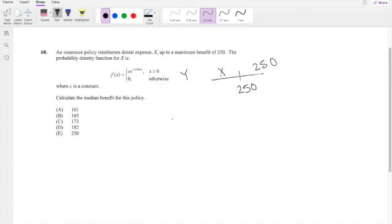C is a constant. We can actually find what C is first. By definition, integrating from 0 to infinity of C times e to the negative 0.004X, we know all probability has to add up to 1, so we're going to get this equals 1. Taking the antiderivative, you get C over 0.004 times e to the negative 0.004X equals 1.